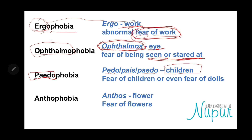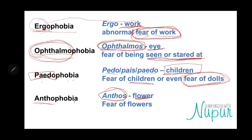The next root word relates to children. Fear of children is called pedophobia. This word is also referred to even as the fear of dolls — and if you've seen the horror movie Annabelle, you might understand pedophobia. Then, anthophobia: 'anthos' means flowers, so the fear of flowers is called anthophobia. Ergo is work, ophthalmos is ophthalmophobia — fear of being stared at, pedo is fear of children or dolls, and antho is fear of flowers.